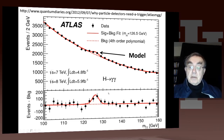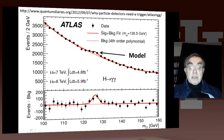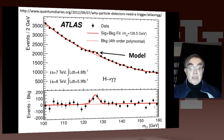Most particles don't decay to two photons — a few pi-zeroes do, but pi-zeroes don't have a mass of 125 GeV; they have a mass much less than a GeV. So there is no ambiguity between pi-zero and Higgs. The plot at the bottom is the signal part of the data — what happens when you take the data and subtract the background — and you see a nice peak.